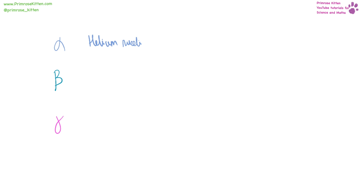There are three types of radiation: alpha radiation, beta radiation, and gamma radiation. Alpha radiation is also known as a helium nucleus. Beta radiation is also known as an electron. Gamma radiation is part of the electromagnetic spectrum — it's a wave. Alpha can be written as α, with mass number 4 and charge +2. Beta (electron) has mass 0 and charge −1. Gamma is just a wave.